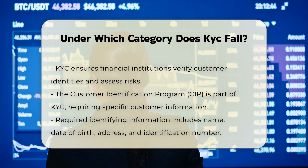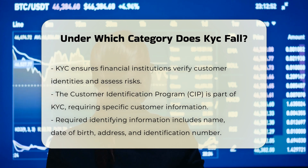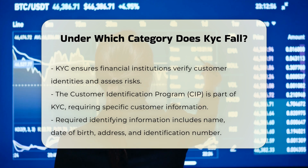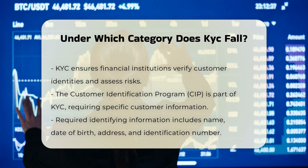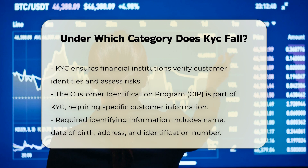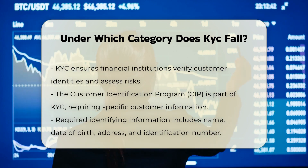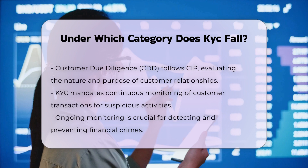The process involves a Customer Identification Program, or CIP, which requires financial institutions to obtain and verify specific identifying information about their customers, such as name, date of birth, address, and identification number. This is followed by Customer Due Diligence, or CDD, where the institution evaluates the nature and purpose of the customer relationship to develop a risk profile.